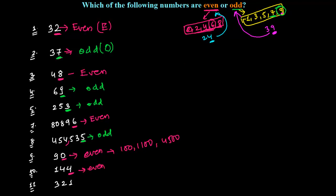Now, the next number is 321. The digit 1 is an odd number that comes here. So that's why this whole 321 is an odd number.